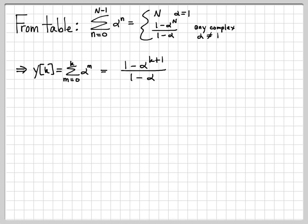It's (1-α^(k+1))/(1-α). Be careful here. The table result says if I sum from 0 up to capital N minus 1, then my answer is 1 minus α to the capital N. So whatever that top limit is, you always add 1 to it when you write down the answer. So here our top limit was k. So when I wrote down the answer, I wrote down α^(k+1). So this is the result of our discrete time convolution for all time greater than or equal to 0.